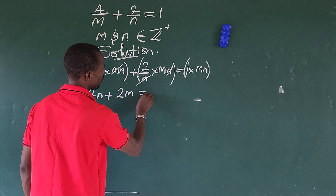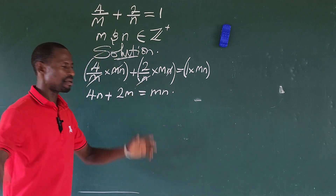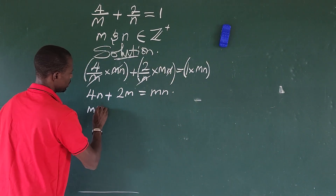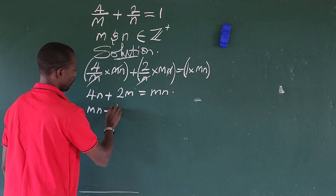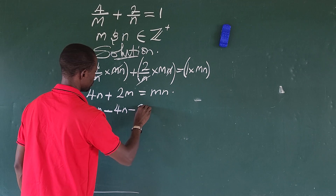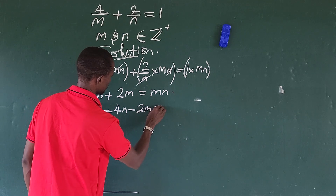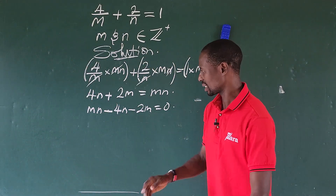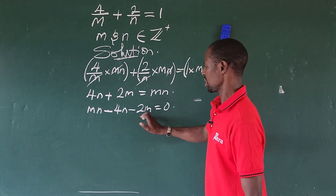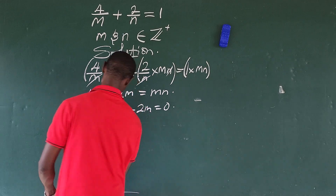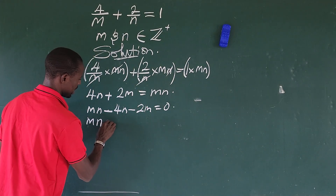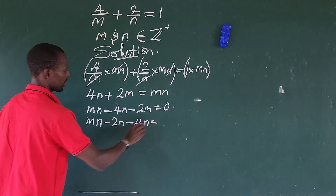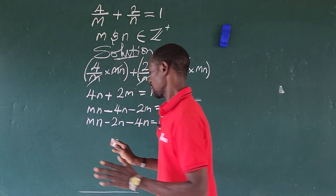We are now left with 4n plus 2m equals mn. Now let's rearrange by taking everything to one side of the equation. If we do that, we get mn minus 4n minus 2m equals zero. Going alphabetically we write: mn minus 2n minus 4n... let me order this as mn minus 2m minus 4n equals zero.